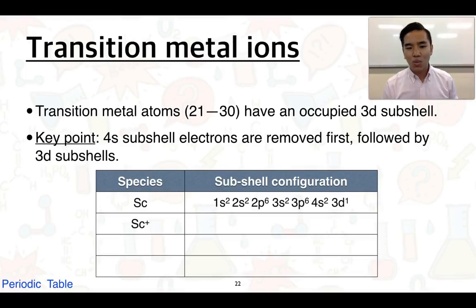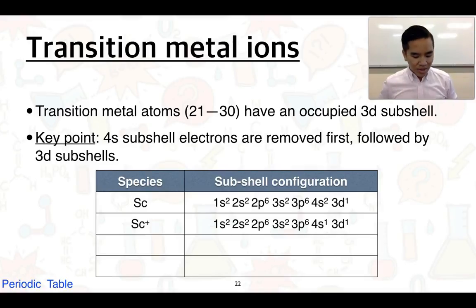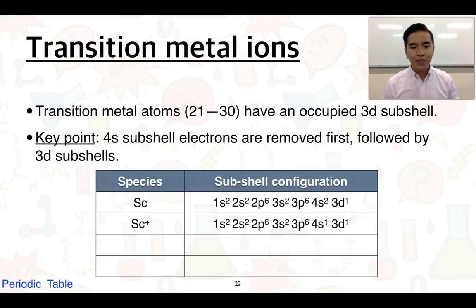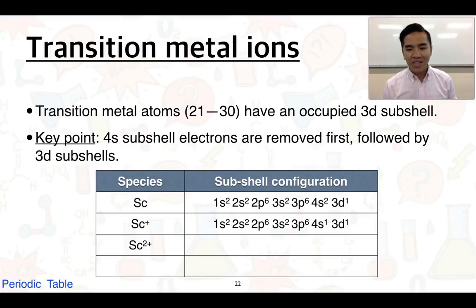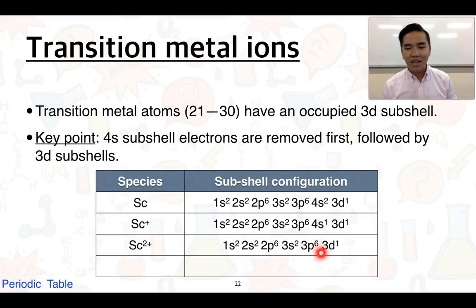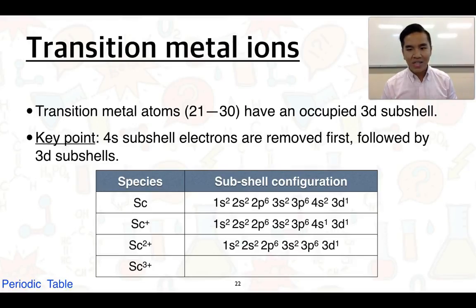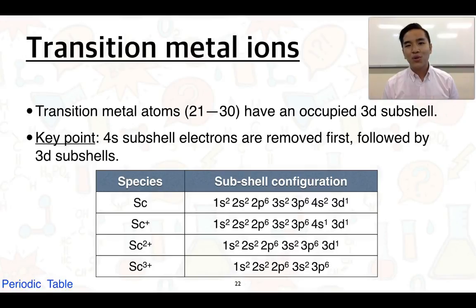For Sc⁺, it has lost one electron from the 4s subshell, keeping the electron in the 3d subshell. For Sc²⁺, it has lost two electrons — losing that one additional electron from the 4s subshell — so the 4s subshell is left out completely and it ends up with only 3d¹. Finally, for Sc³⁺, it has lost yet another electron, this time from the 3d subshell. That concludes the first part of subtopic 2.2 on ionic bonding.